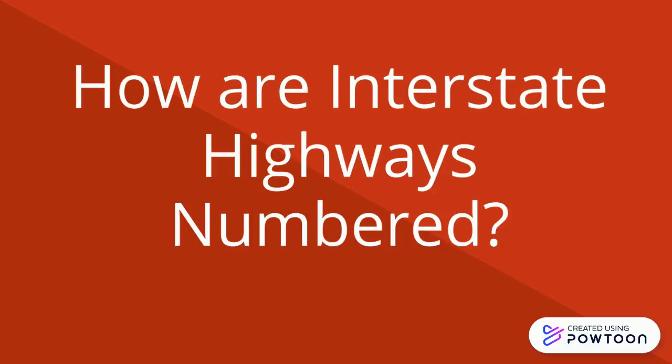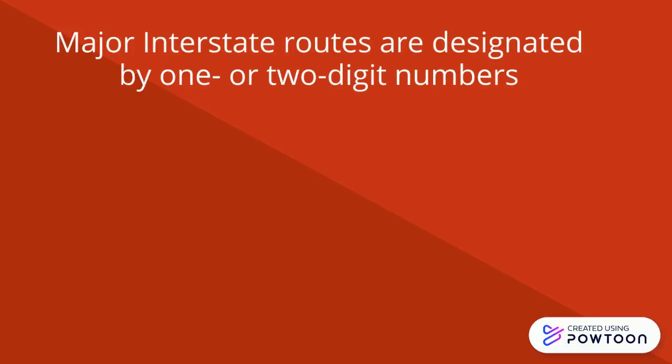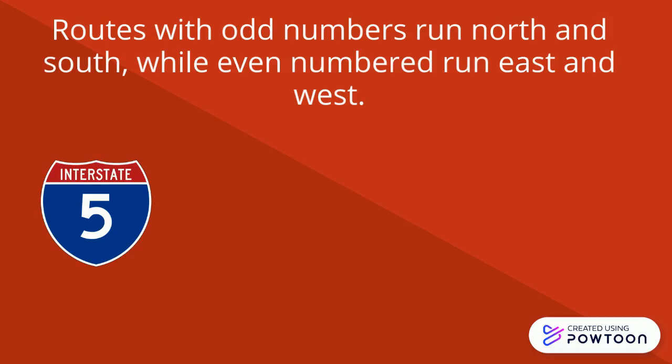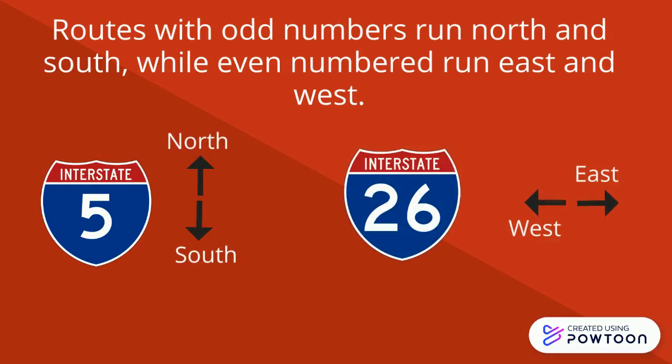Geography Minute. How are interstate highways numbered? Major interstate routes are designated by one or two-digit numbers. Routes with odd numbers run north and south, while even-numbered routes run east and west.